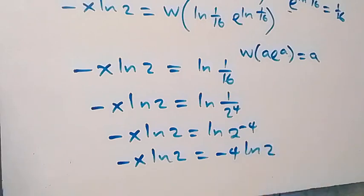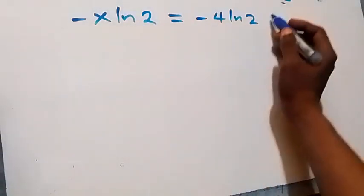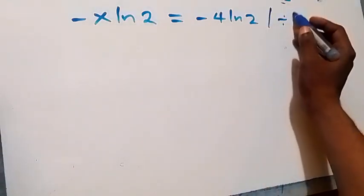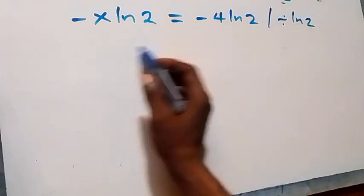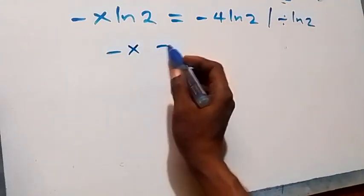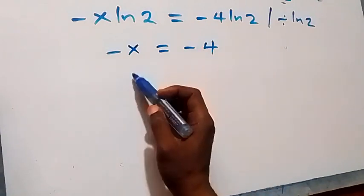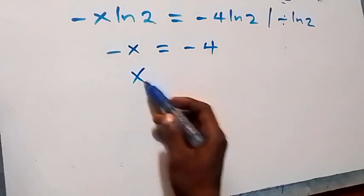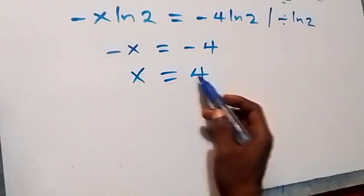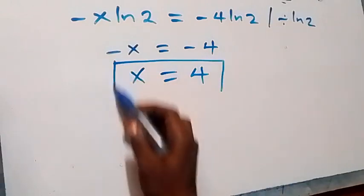From here we can divide through by ln2 — ln2 cancels out — and we have minus x equals minus 4. Then multiplying through by minus 1, this becomes x equals 4.